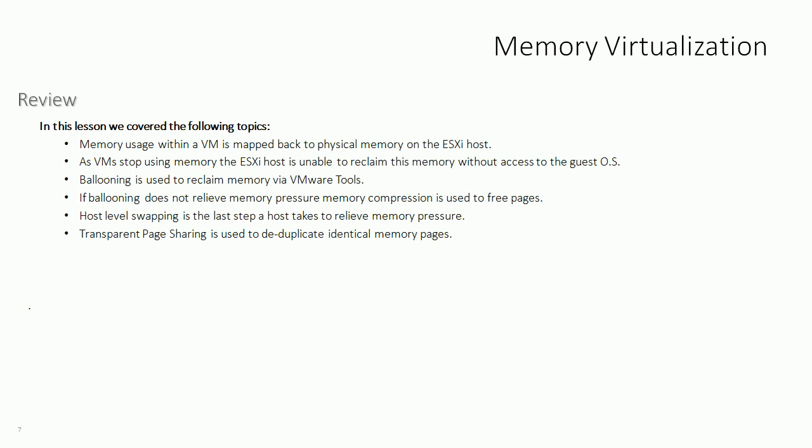In review: memory usage within a VM is mapped back to physical memory on the host as the guest OS gives out memory pages to applications. As VMs stop using memory pages, the ESXi host can't detect this, so it eventually reclaims memory using ballooning — which requires VMware Tools, which is why it's a best practice to always have VMware Tools installed. Occasional ballooning is normal; if ballooning doesn't relieve pressure it becomes continuous, then memory compression kicks in, and if that's still not enough, host level swapping begins using the vSwap file. Transparent page sharing runs constantly to deduplicate identical memory pages, independent of contention.